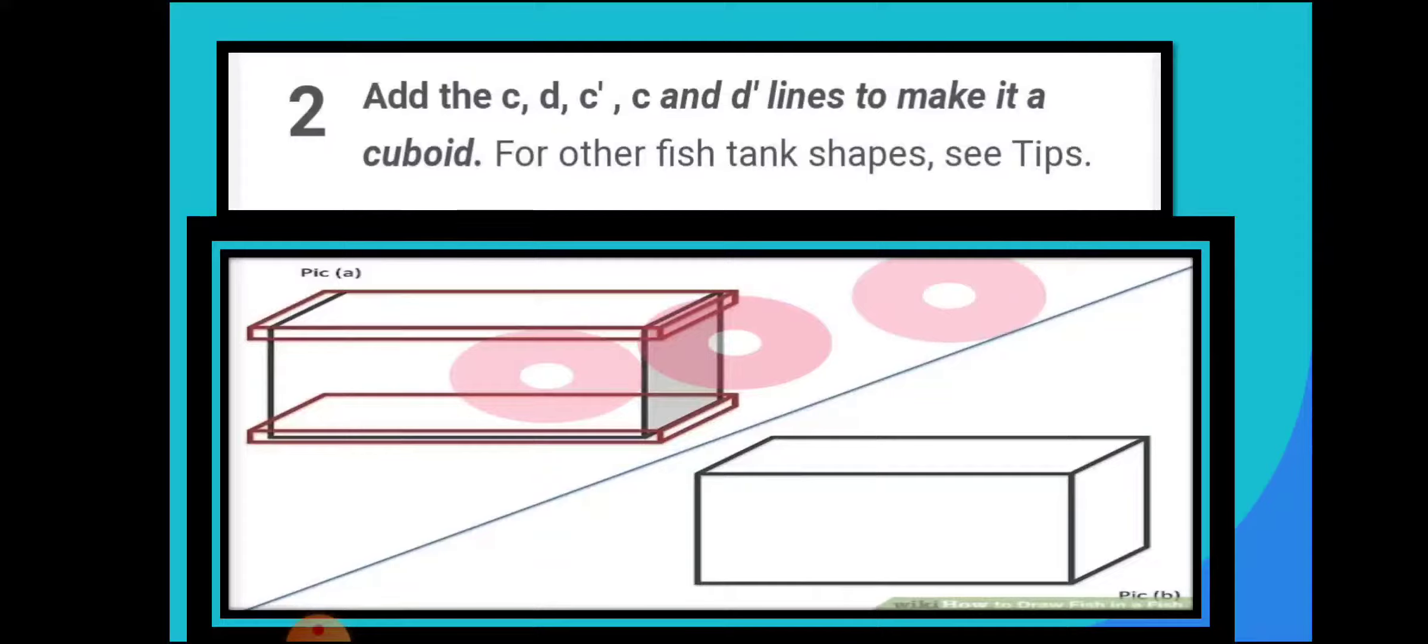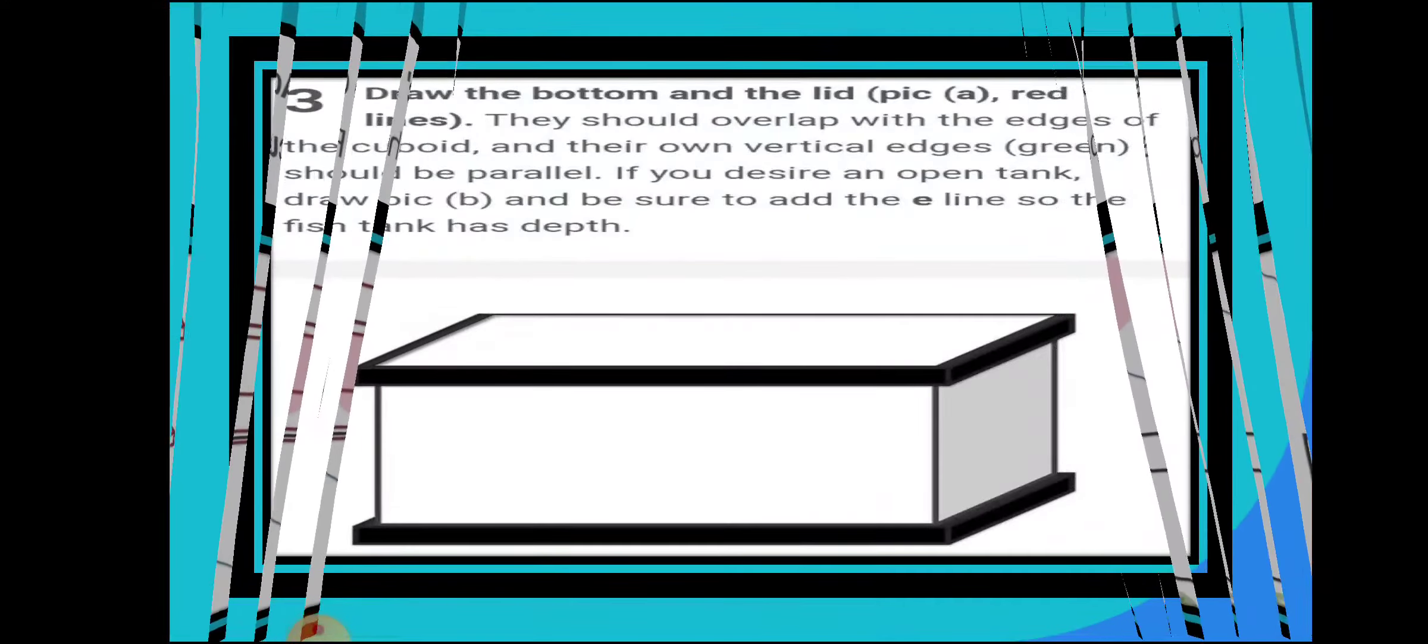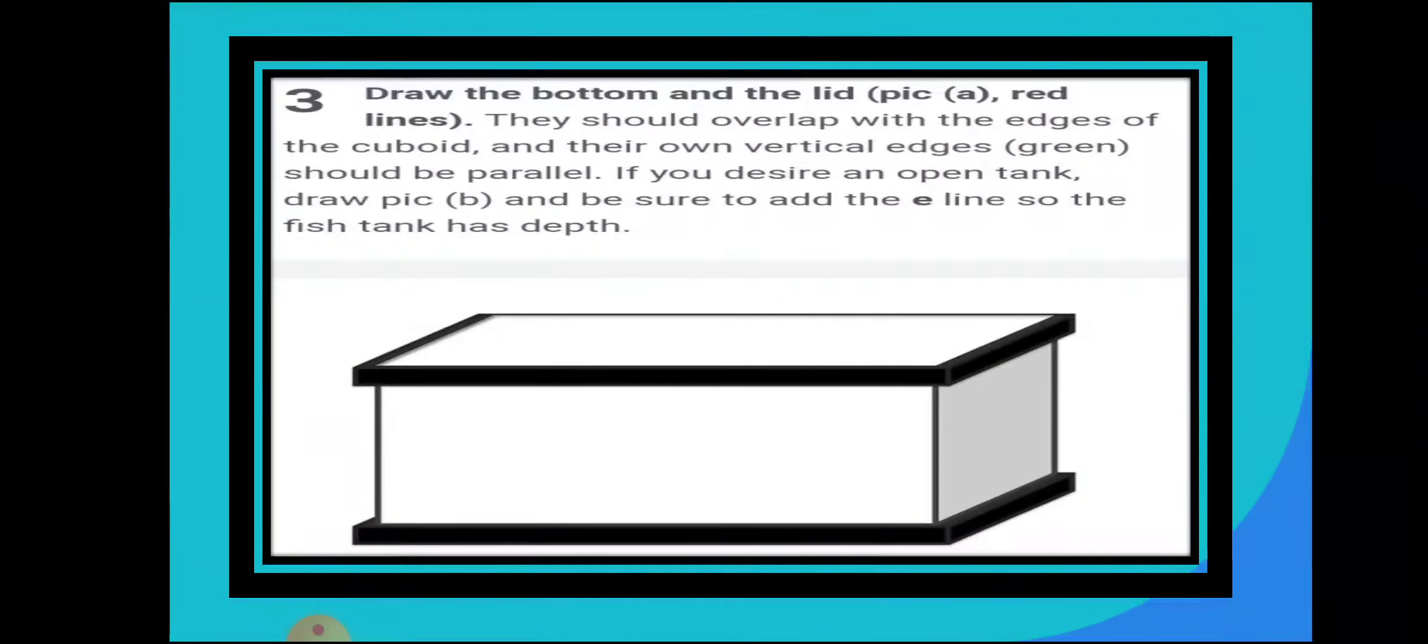Now look this picture students and follow step by step. For other fish tank shapes, see these tips. Now draw the bottom and the lid, pick A red lines. They should overlap with the edges of the cuboid and their own vertical edges. This should be parallel. If you desire an open tank, draw pick B and be sure to add the E line so the fish tank has depth.